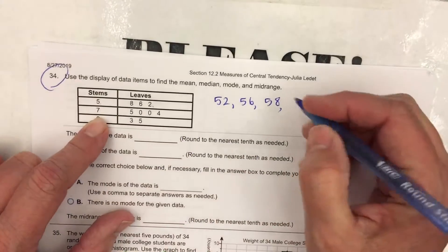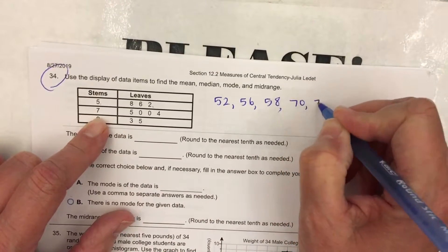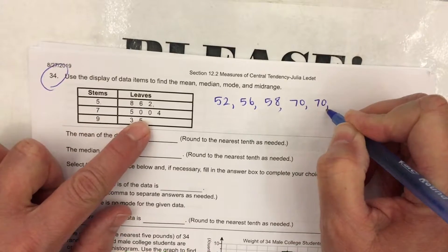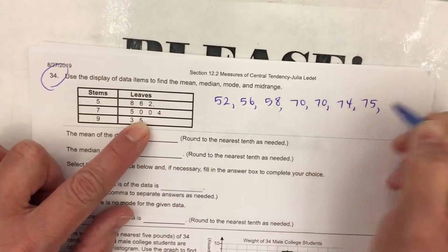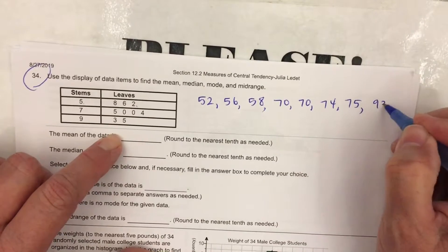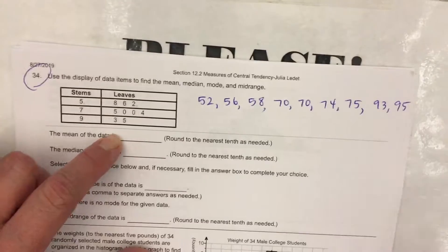In the 70s, I have 70, 70, that occurs twice, 74, and 75. And in the 90s, I have 93 and 95.